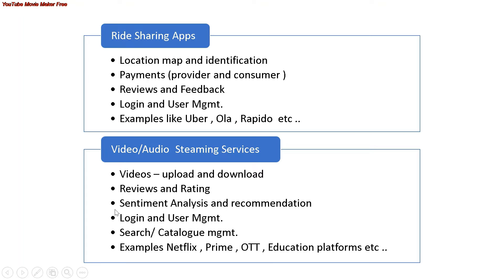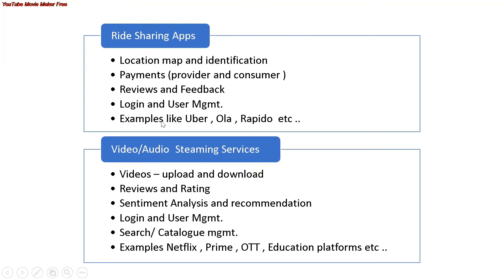Ride sharing apps like Ola, Uber, and Rapido are great candidates for microservices architecture. You can build small example projects to get an end-to-end understanding of how microservices work, including network architecture and cloud management using AWS, Azure, or any cloud platform. Creating a simple project with different services helps you understand how everything fits together.